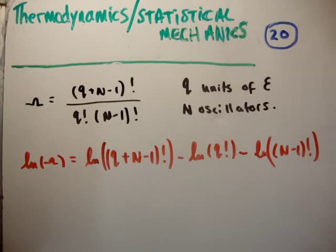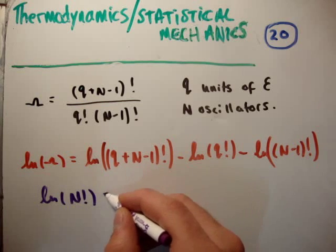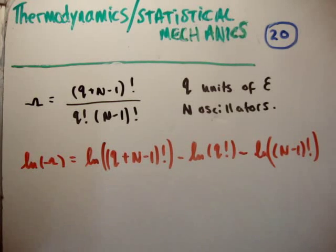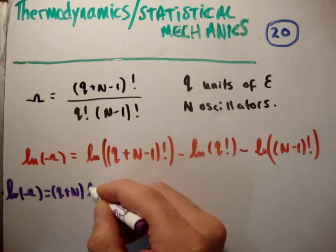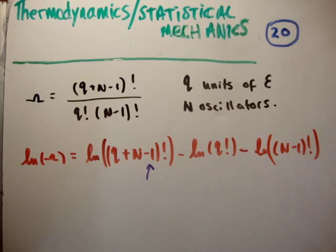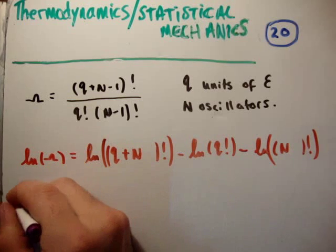Taking the natural logarithm of a factorial involves Stirling's approximation, which says that ln(n!) = n·ln(n) - n. Before applying it, I need to make an approximation: this factor of 1 is very small in comparison with n and q, so I'm going to drop the -1 terms from both (q + n - 1) and (n - 1).